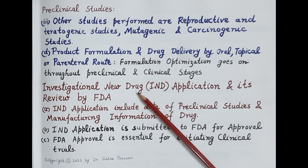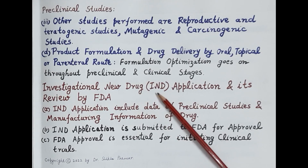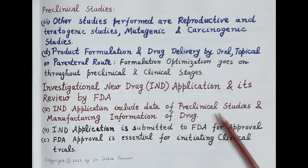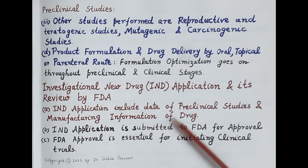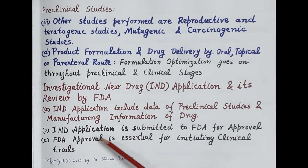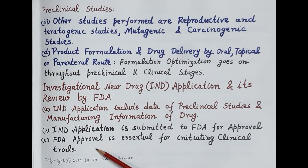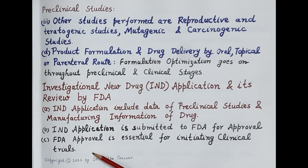After successful completion of preclinical studies, the preclinical data is incorporated into an Investigational New Drug (IND) application, which is submitted to the FDA for review. The IND application includes data from preclinical studies and manufacturing information of the drug. FDA approval is essential for initiating clinical trials. By the end of preclinical studies, out of 250 potential drug candidates, only five drug candidates are left for further evaluation, while the rest are rejected.